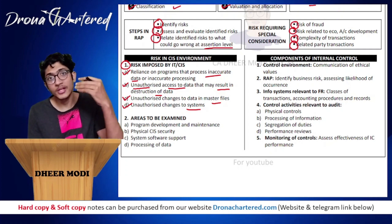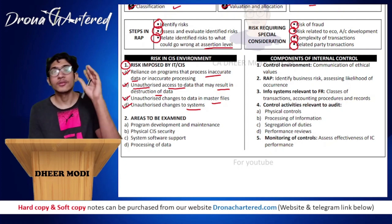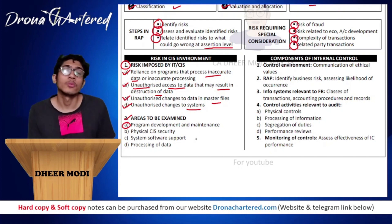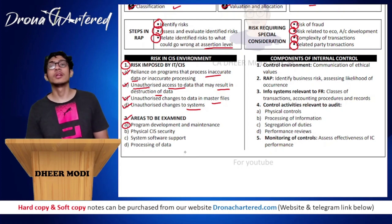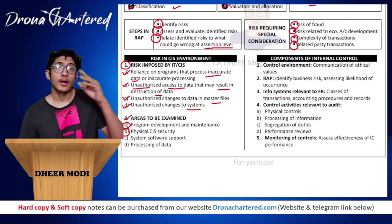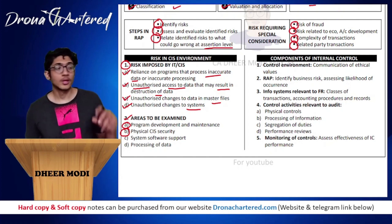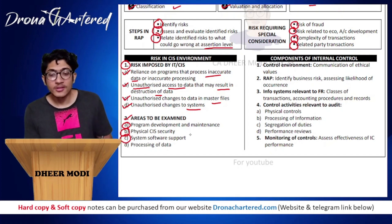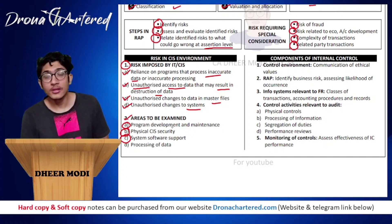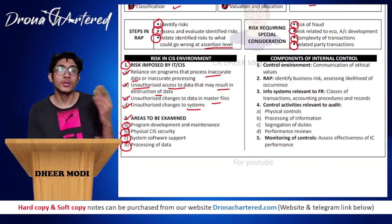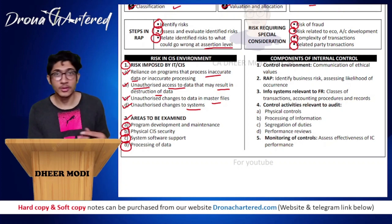So in summary, one risk regards the system processing incorrect data, and three risks regard unauthorized access. The areas to be examined are: program development and maintenance - what systems and programs are being used and how they are maintained; physical CIS - for example your server room, whether there is a fingerprint or card mechanism so only authorized personnel can enter; system software support - do you have software support for all the systems you are using; and processing of data - you perform a process walkthrough to understand how each system processes data.